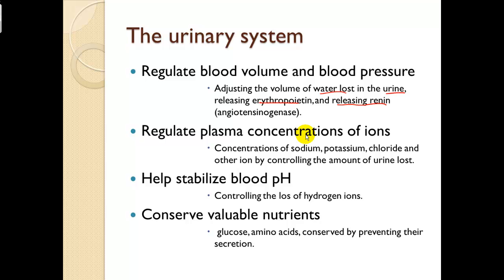The urinary system regulates plasma concentrations of ions — sodium, potassium, and chloride — by controlling the amount of urine lost. It stabilizes blood pH by adjusting hydrogen ions. pH is the concentration of hydrogen ions in the blood, so by adjusting those in or out, we can adjust overall acid-base balance. Glucose and amino acids are conserved by preventing their secretion.